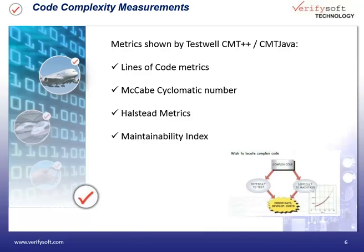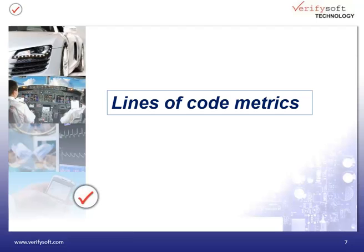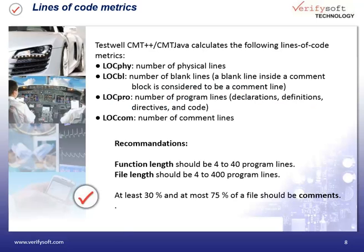Testbed's code complexity measurement tools show lines of code metrics, McCabe cyclomatic number, Halstead metrics, and Maintainability index. The tool calculates different lines of code metrics like number of physical lines, number of blank lines, number of program lines, and the number of lines with comments. A function should have between 4 and 40 program lines. The file's length should be between 4 and 400 program lines, and 30 to 75% of a file should be comments.